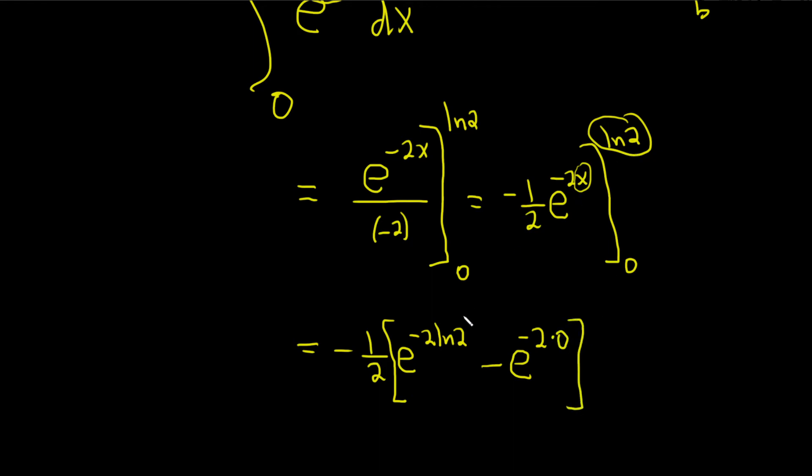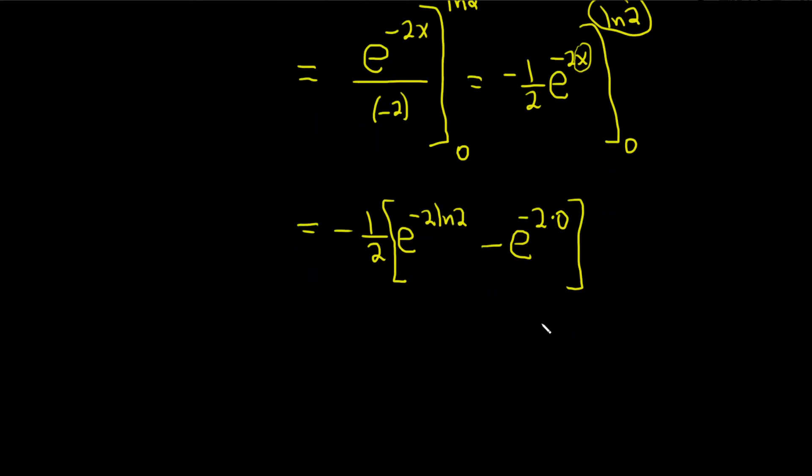So first we plug in ln 2, that's this piece here. We subtract, then we plug in 0. Let's keep going.